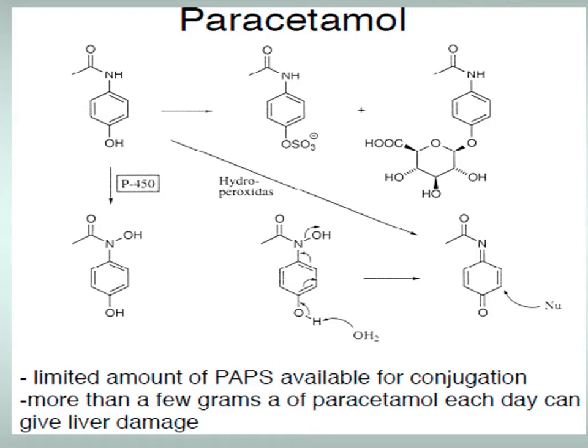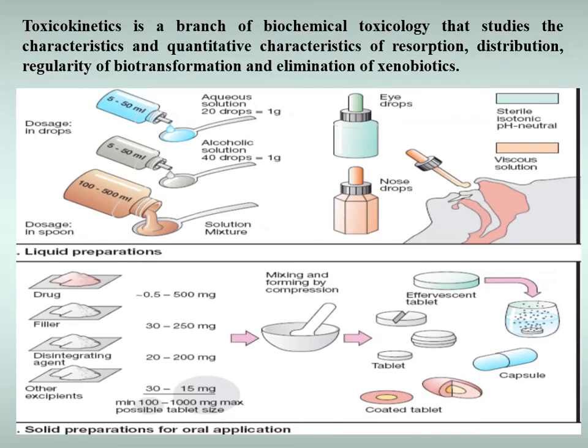As mentioned above, dosage is one of the most important factors determining the toxicity of chemicals. Depending on the dose, any chemical can act as both a drug and a poison. From the point of view of toxicological chemistry, it is important to focus on three doses: medicinal or therapeutic, poisoning or toxic, and deadly or lethal doses.